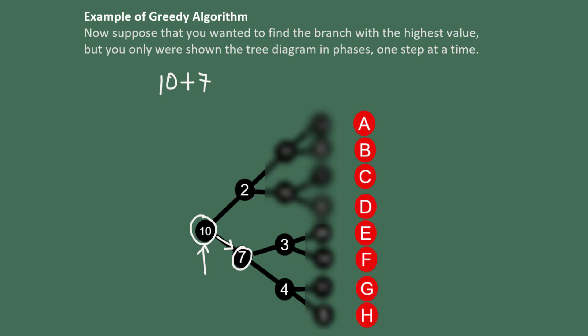Then I'll move on to the next phase. From 7, I choose between 3 and 4. 4 is larger, so we're going to travel along the branch to 4. Then we look at the next phase. What's larger, 5 or 11?